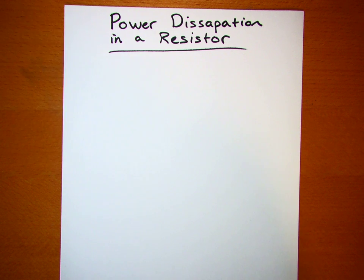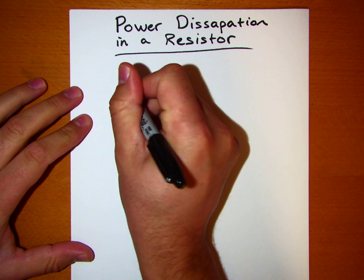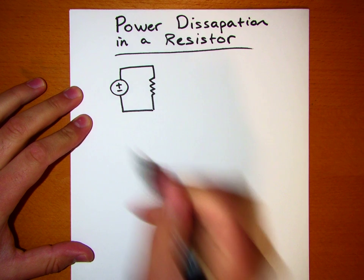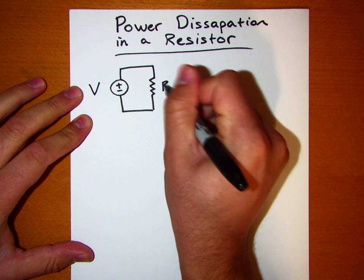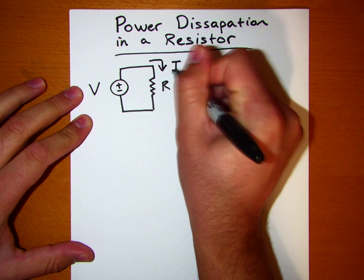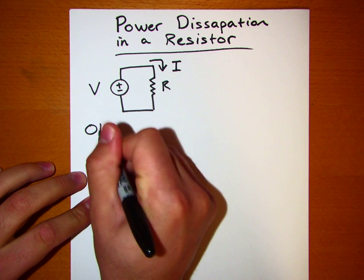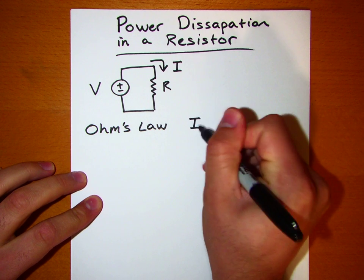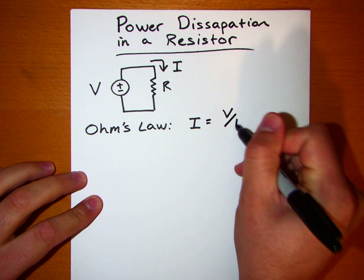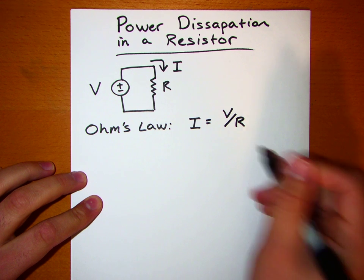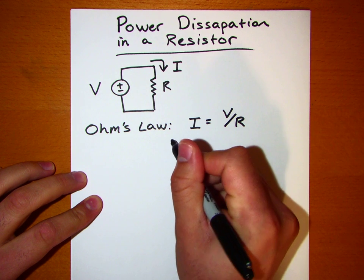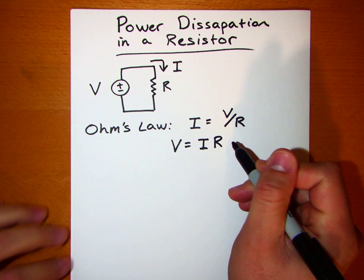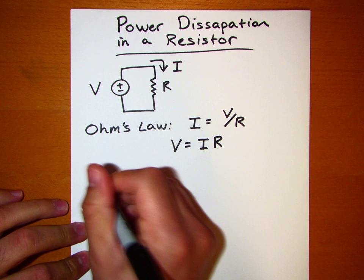This is to answer some general questions about power dissipation in a resistor. To start, we'll go with a simple resistor circuit. In this circuit we have our voltage source V, our resistor R, and there'll be a current through that resistor of I. Ohm's Law tells us that the current through that resistor is going to be equal to the voltage across the resistor divided by the resistance. Similarly, if we multiply through this equation by R, we get that the voltage across the resistor is equal to the current times the resistance. We'll use both of these forms of Ohm's Law to develop expressions for the power dissipated in a resistor.